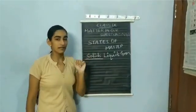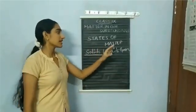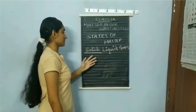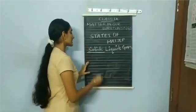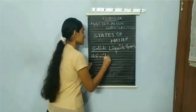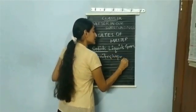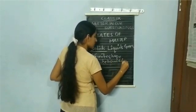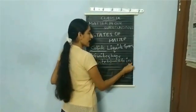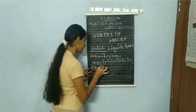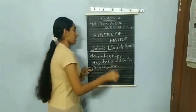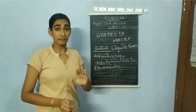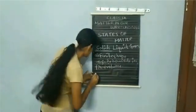The next topic is the states of matter. There are three states: solids, liquids, and gases. First, let's look at solids. Solids have a definite shape, definite boundaries, and a fixed volume. In solids, the particles are held closer to each other, so it is very difficult to compress them. Therefore, solids cannot be compressed — they are incompressible.